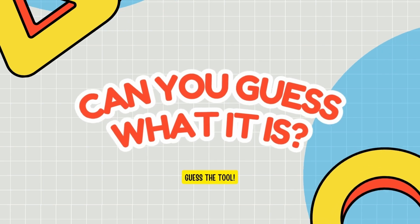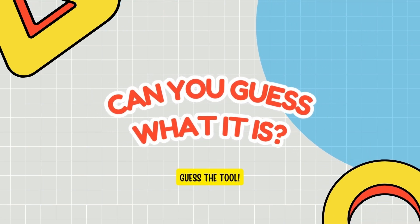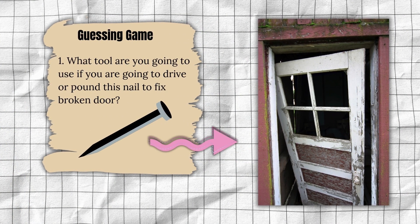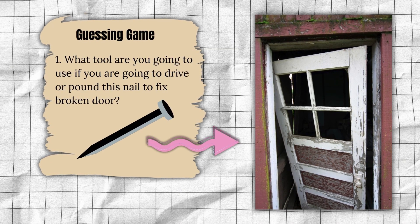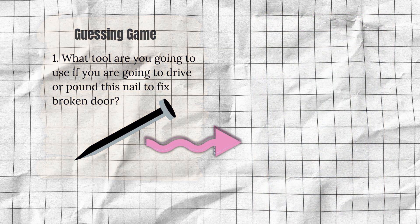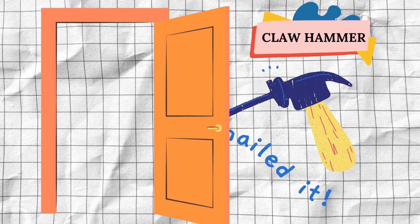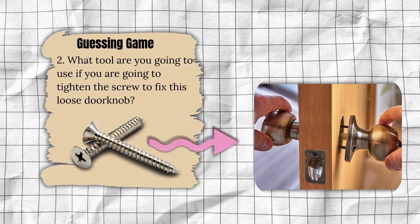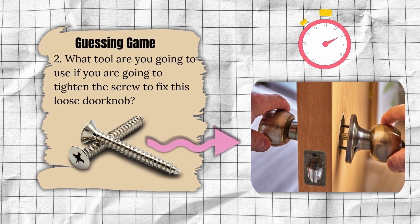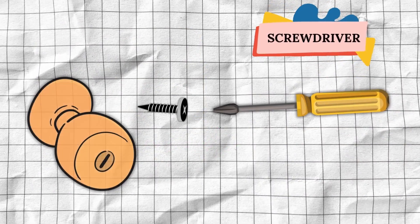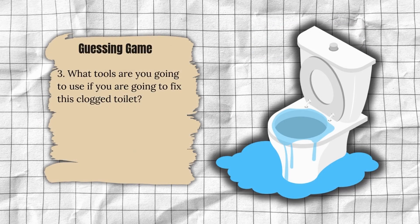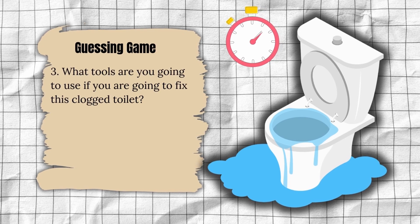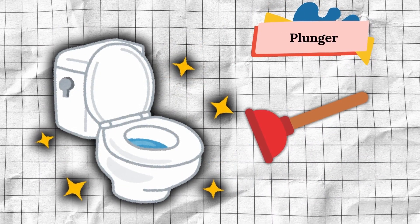Let's play a guessing game. Here's how to play: I'll give you examples of broken objects or fixtures, and you try to guess which tool would be used to fix each one. Number one, what tool are you going to use if you're going to drive or pound this nail to fix this broken door? Very good — hammer is correct. Number two, what tool are you going to use to tighten the screw to fix this loose doorknob? Very good — screwdriver is correct. Number three, what tool are you going to use to fix this clogged toilet? Very good — plunger is correct.